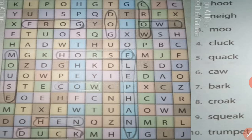Question number 4, cluck. Which animal will make a sound cluck? Yes, it is hen. H-E-N, hen. Question number 5, quack. Which animal will make a sound quack? Yes, it is duck. D-U-C-K, duck.